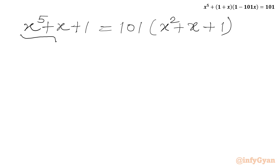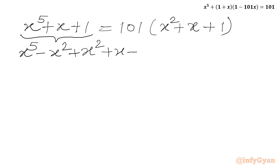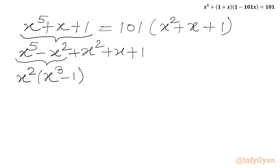Now I will consider LHS. Here I will add and subtract x square. So I will write minus x square first, then plus x square, then we have the two terms x, then plus 1. Let us simplify LHS first. From these two terms I can take x square common out, so in the bracket we will get x cube minus 1. And then we have x square plus x plus 1. Now I can use the a cube minus b cube formula here.